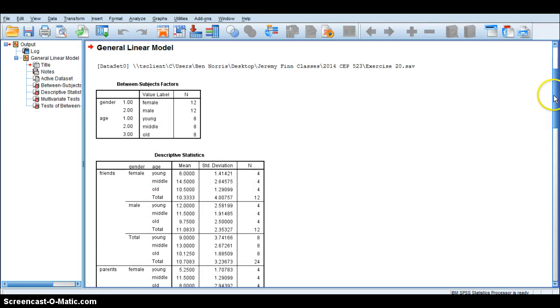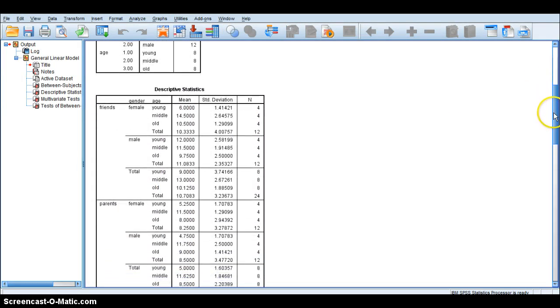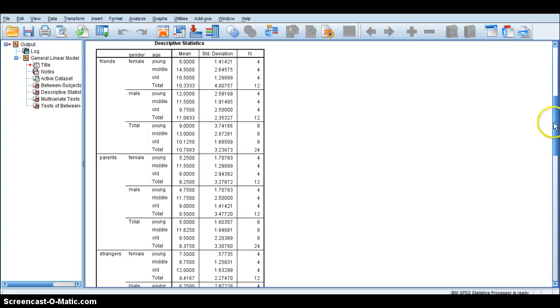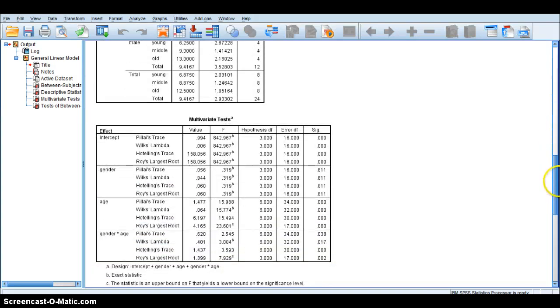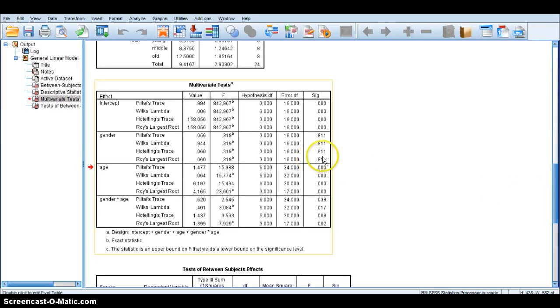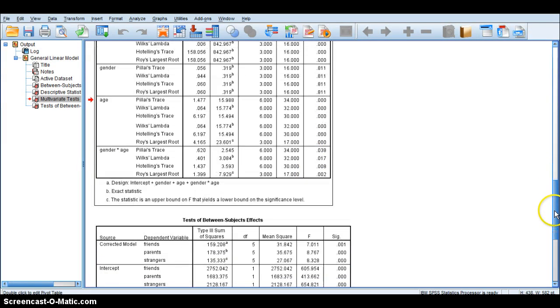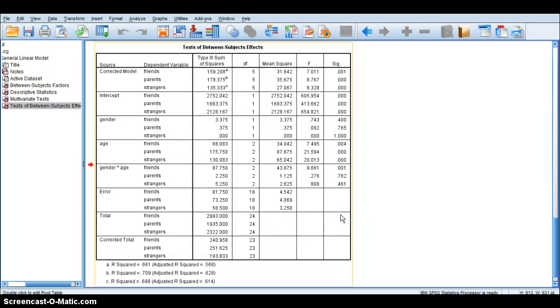And you will get an output box. So it'll give you a table of descriptive statistics for each dependent variable. It'll give you a multivariate table and it will give you your univariate effects as well. And we will go over how to interpret those in lab as well as in class.